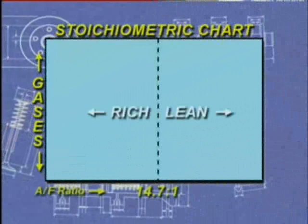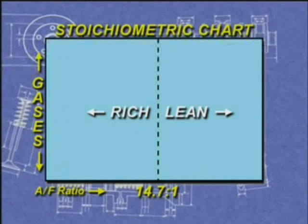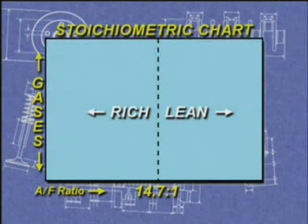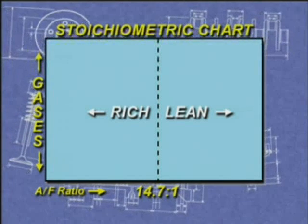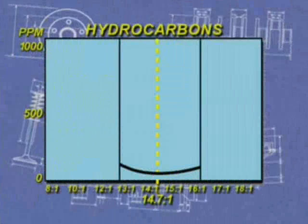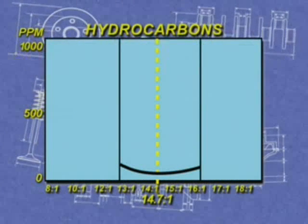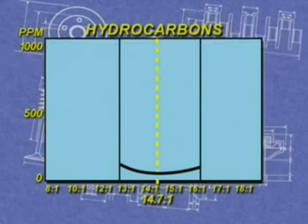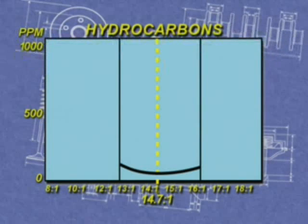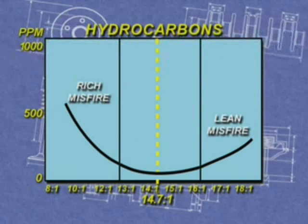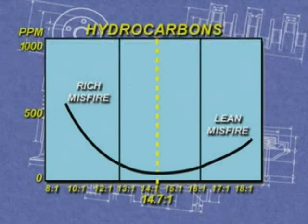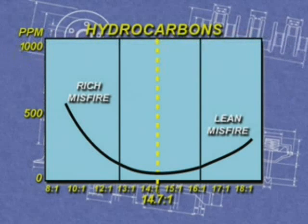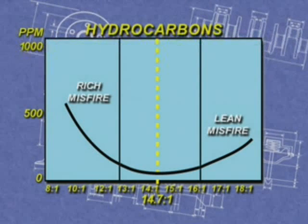The stoichiometric chart displays gas concentrations along the vertical axis based on the air-fuel ratio shown along the horizontal axis. Beginning with hydrocarbons, notice the relative stability of HC between the air-fuel ratios of 13 to 1 and 16 to 1. As the mixture drifts out of this range, however, it ultimately becomes so imbalanced that the engine will begin to misfire, causing a significant increase in hydrocarbons.